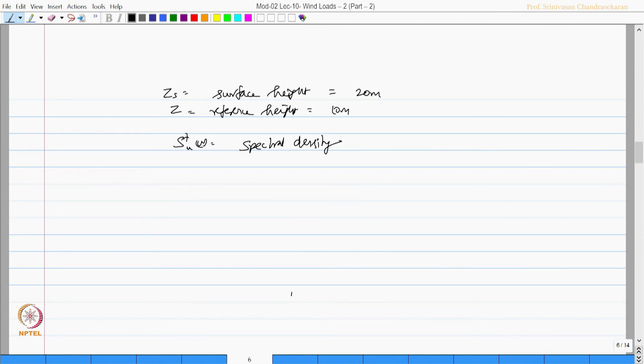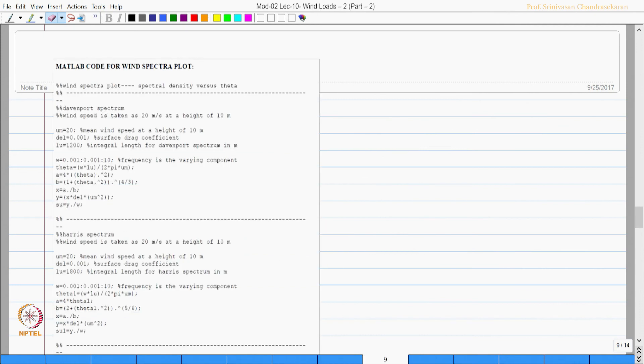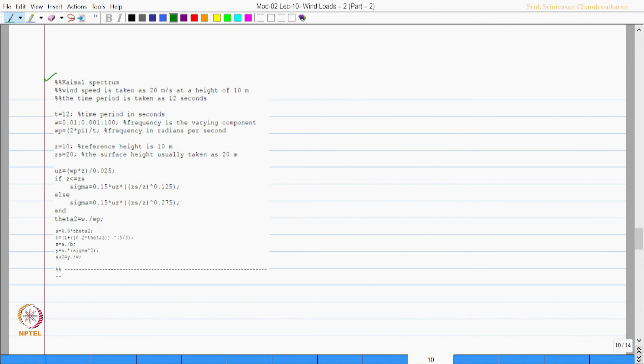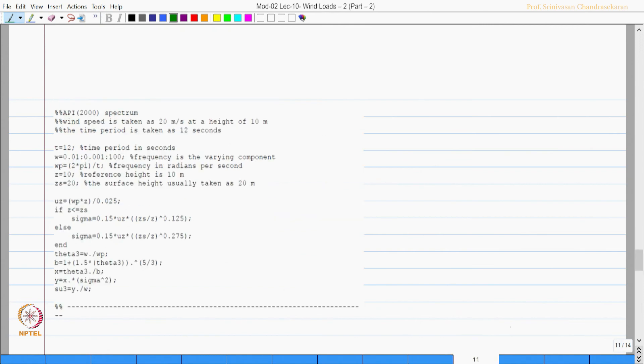Now we have a program which gives you the coding for plotting all these spectral plots. The coding helps you to plot the Davenport spectrum for a constant wind speed of 20 meter per second and the reference datum is 10 meter. This the coding available for Davenport, Harris, Kaimal spectrum and for API spectrum.